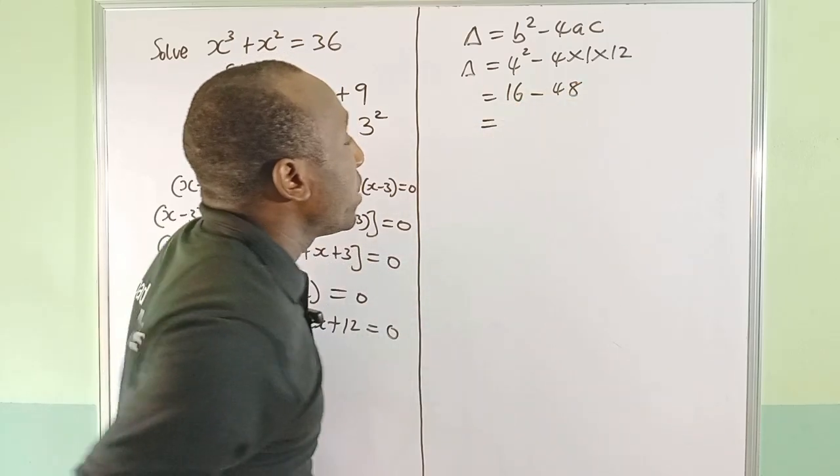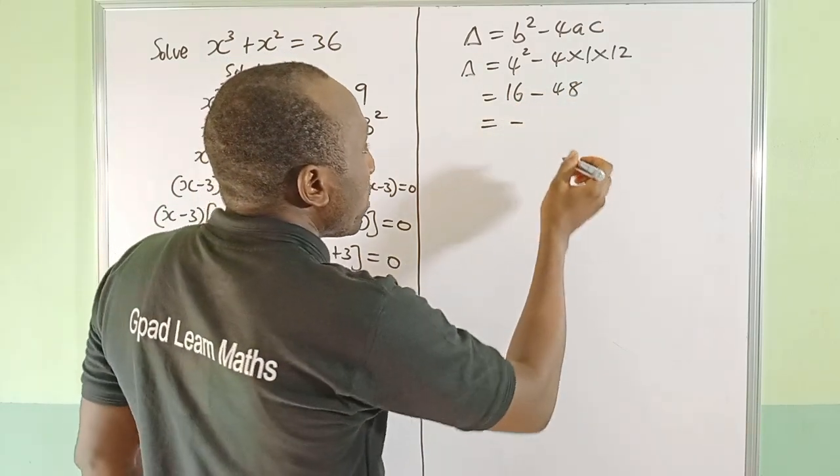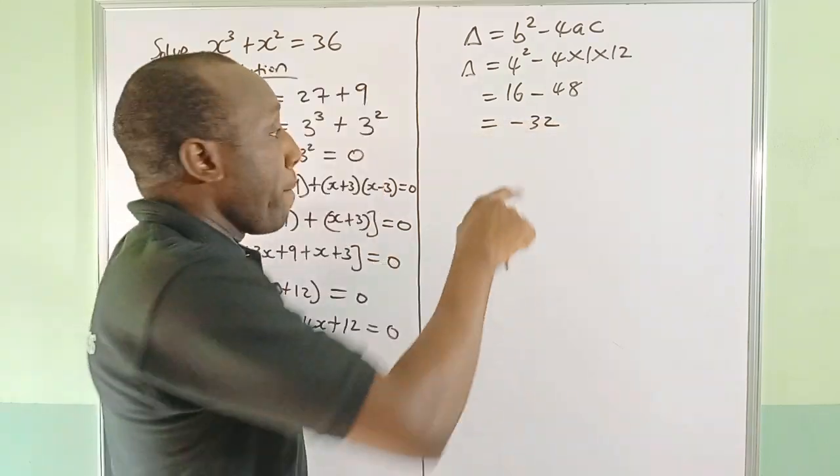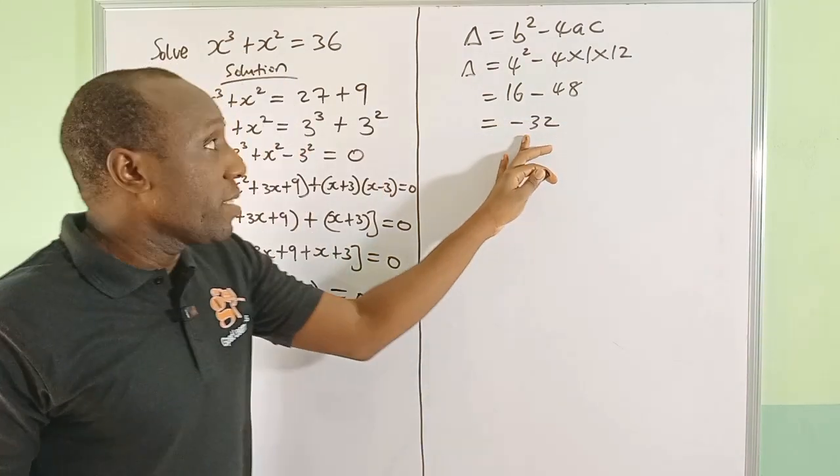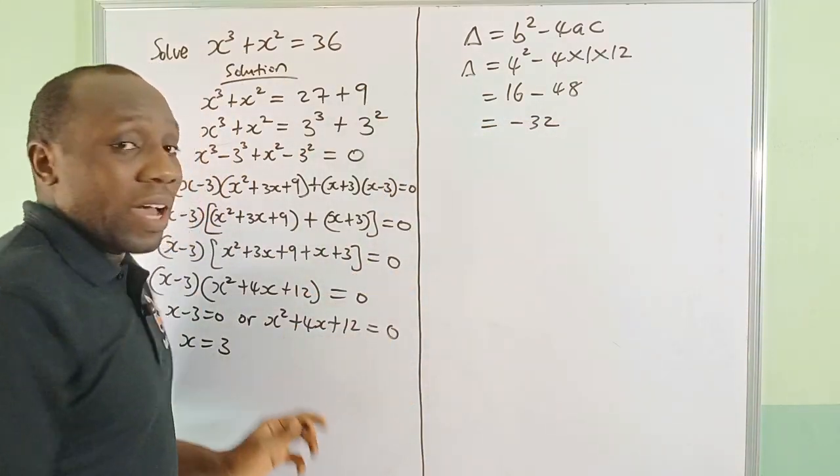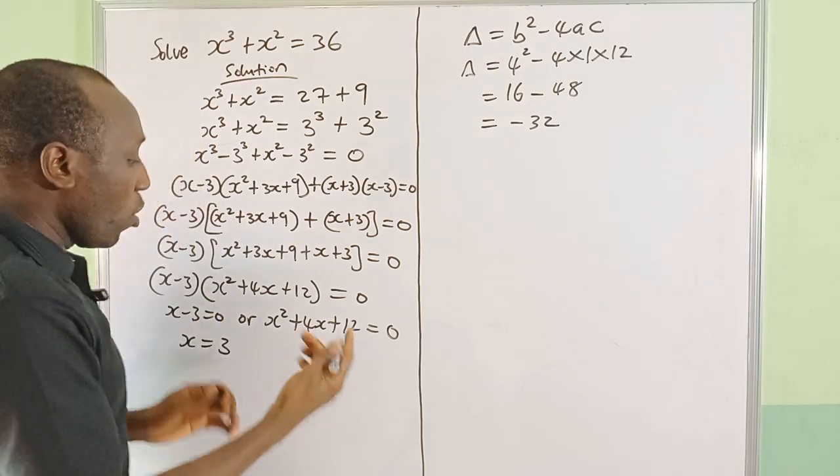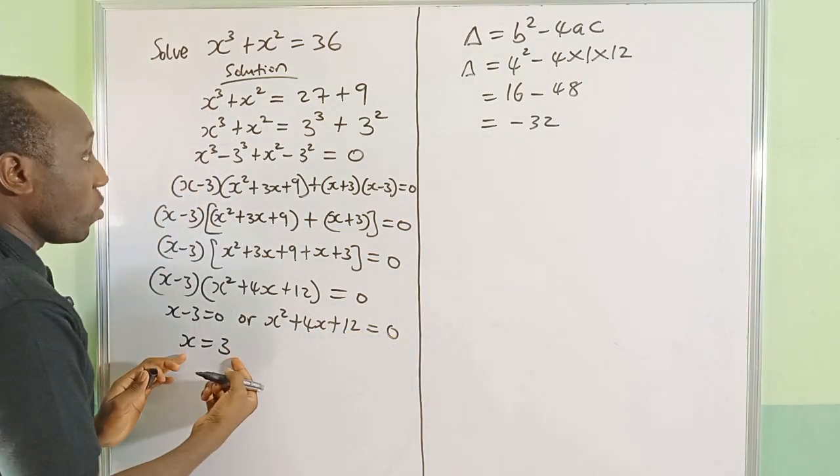16 - 48 = -32. Because of the negative value here, it means that this quadratic equation has imaginary roots and we're not going to bother ourselves with that. So x = 3 is one of the solutions of this equation.